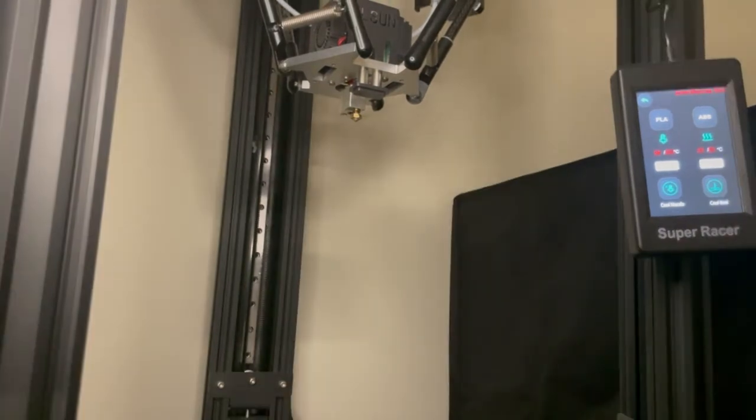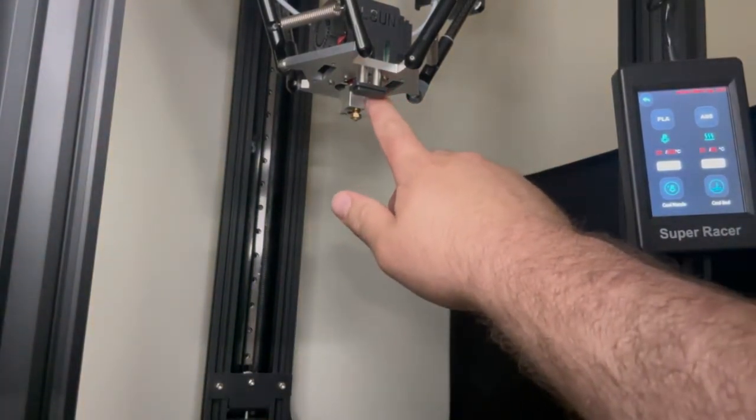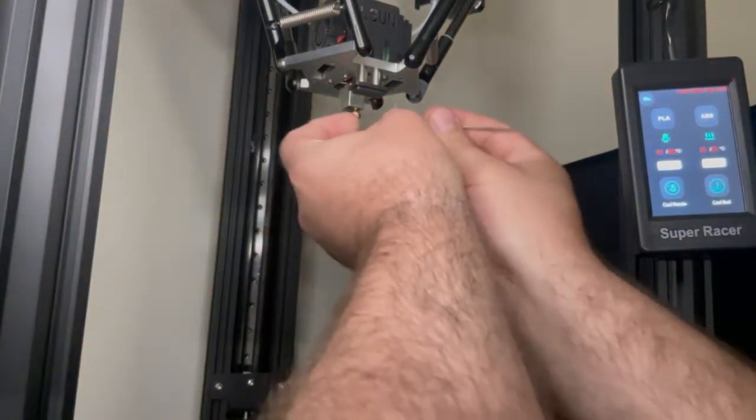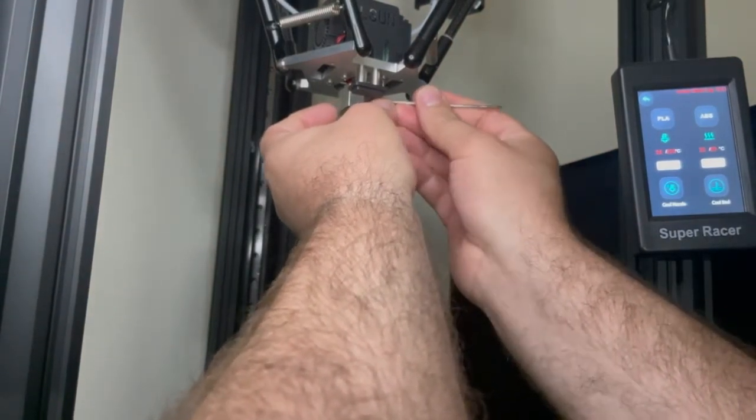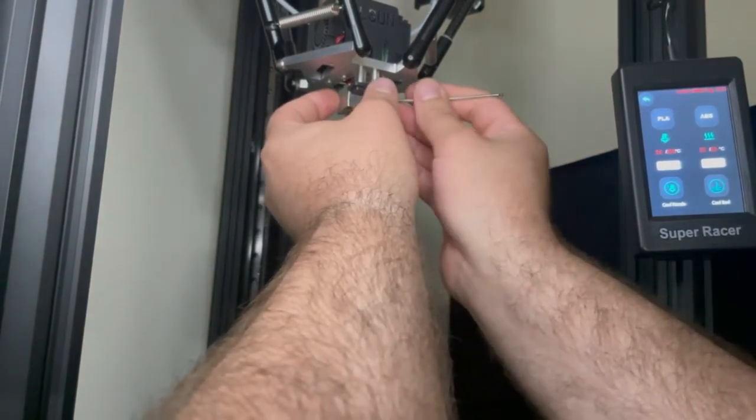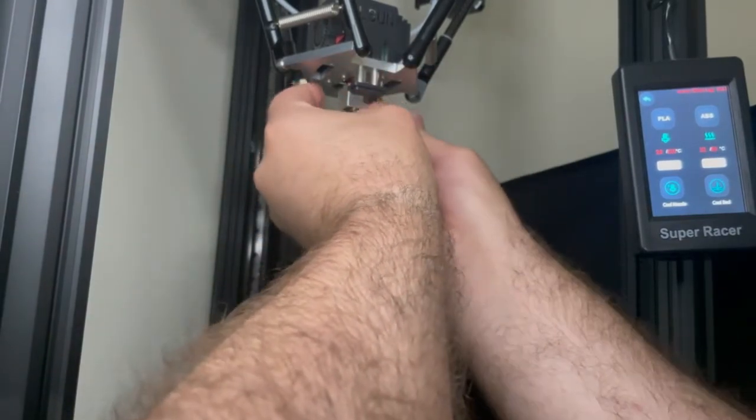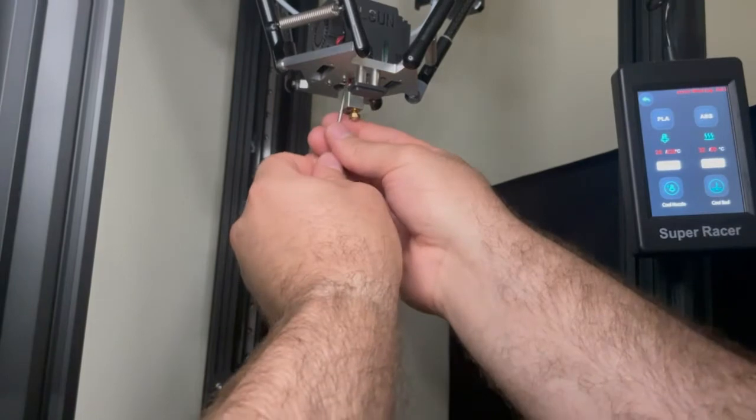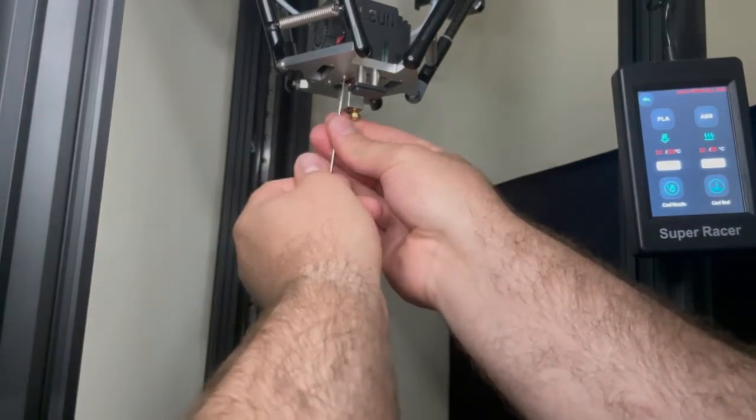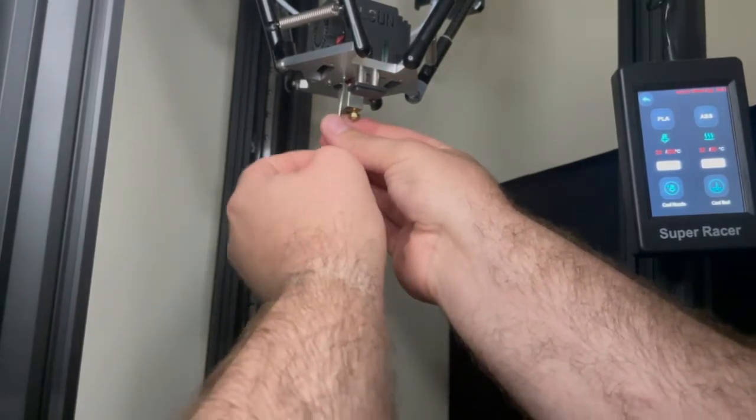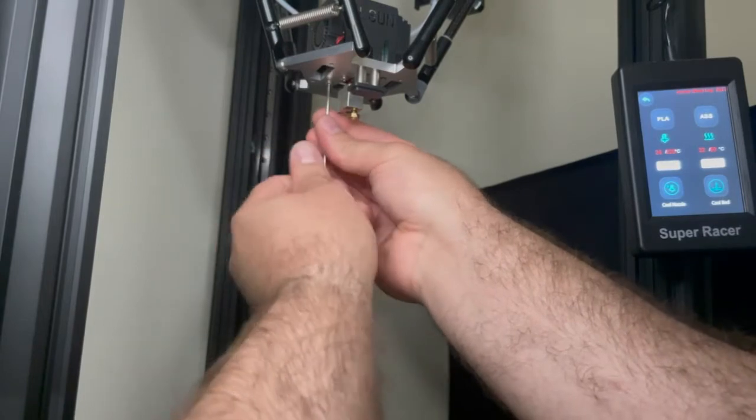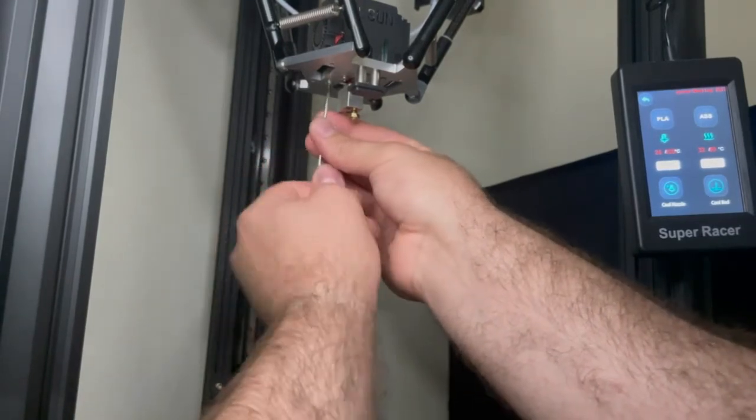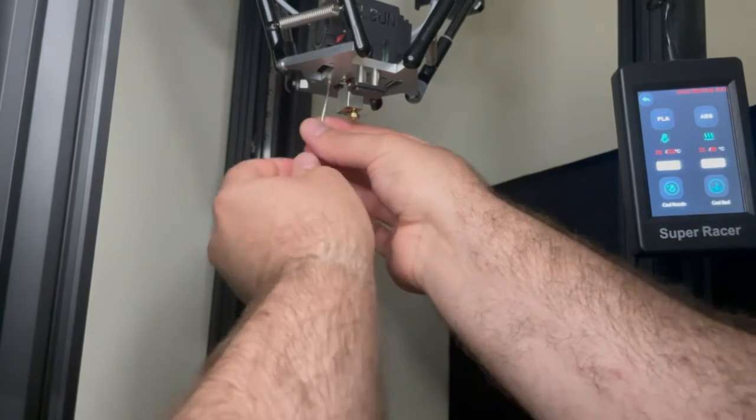Now I'm going to be removing the screws on the bottom here. There's four of them, and it is the same size Allen wrench. So the two closer together are what holds the hot ends together, and this one over here is holding the top housing.